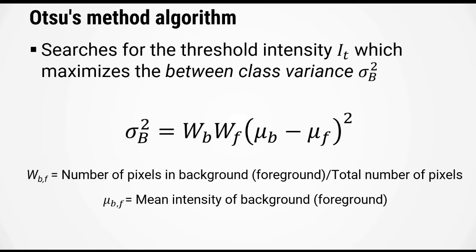This variance is given by the equation sigma_b squared equals w_b times w_f times mu_b minus mu_f squared. W_b and w_f are the weights equal to the number of pixels in the background or foreground divided by the total number of pixels. Mu_b and mu_f equal the mean intensity of the background or foreground pixels.